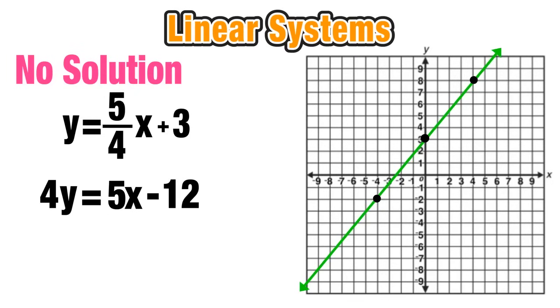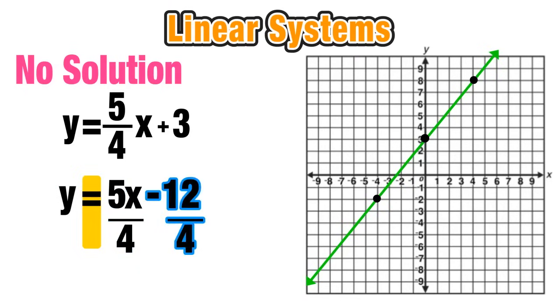Now notice that the second line is not in y equals mx plus b form. I have to get rid of that 4 attached to the y on the left side. The opposite of multiplication is division. So by dividing everything by 4, I cancel out the 4 on the left side. 5 divided by 4, I'm going to leave as 5 over 4 because it can't be simplified. Negative 12 divided by 4 is negative 3. And now my line is in mx plus b form, and I can graph it.